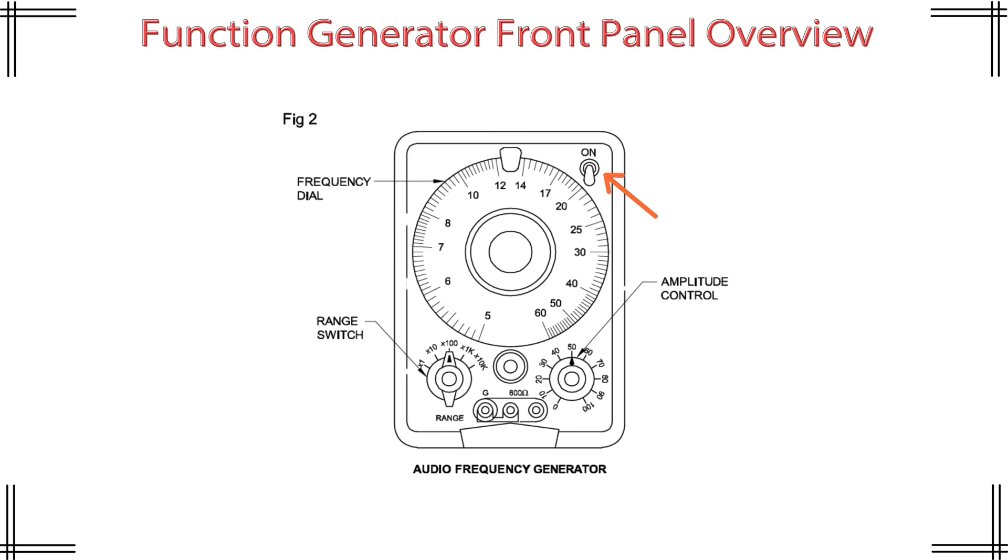Number four. Power switch. Top right. Label: On. Function: Turns the generator on or off. Type: Simple toggle switch.